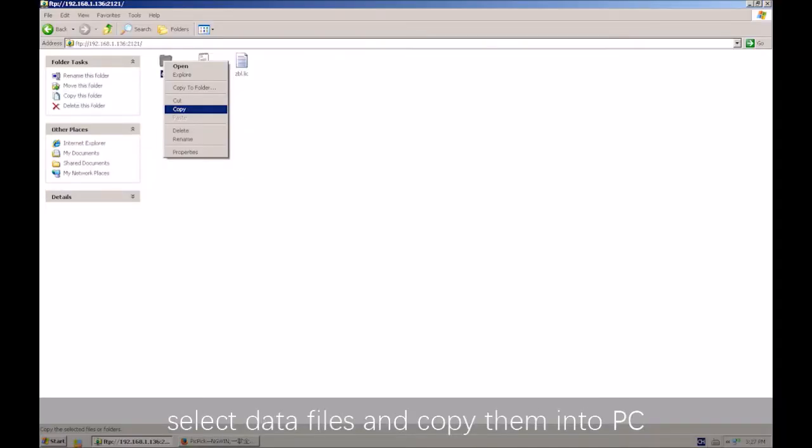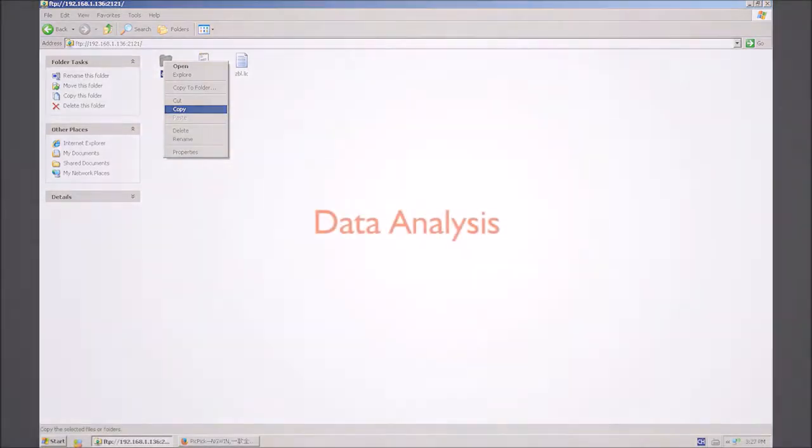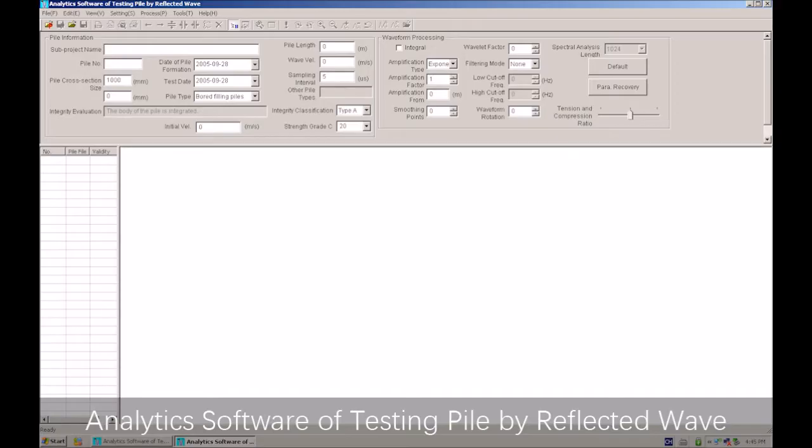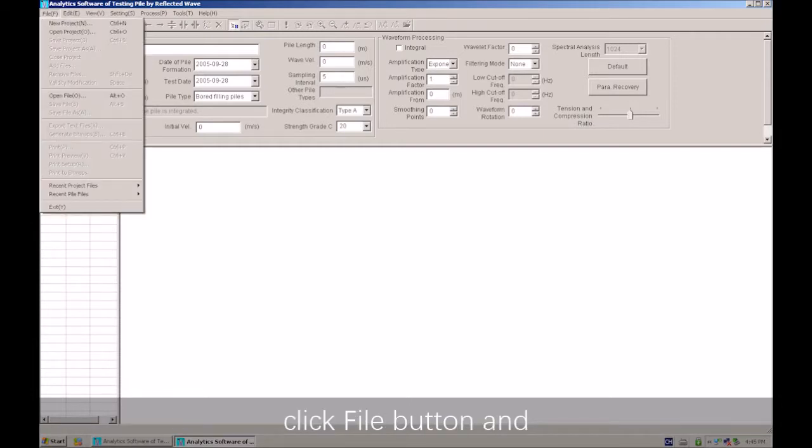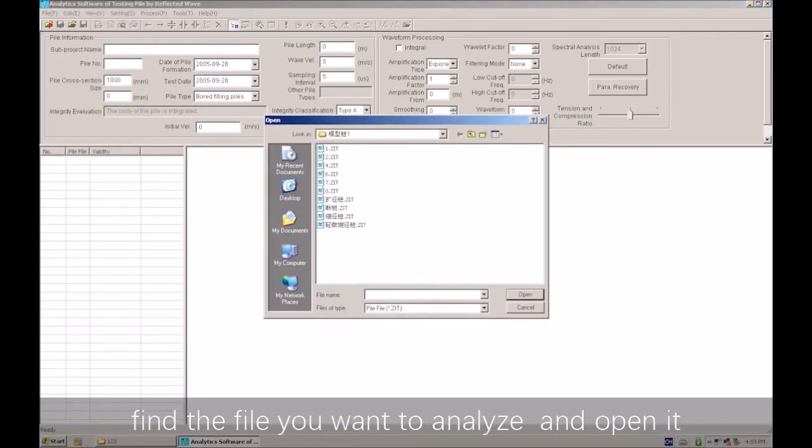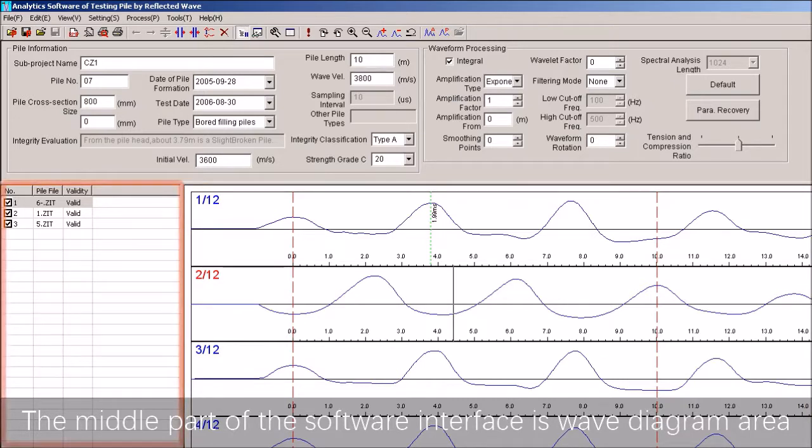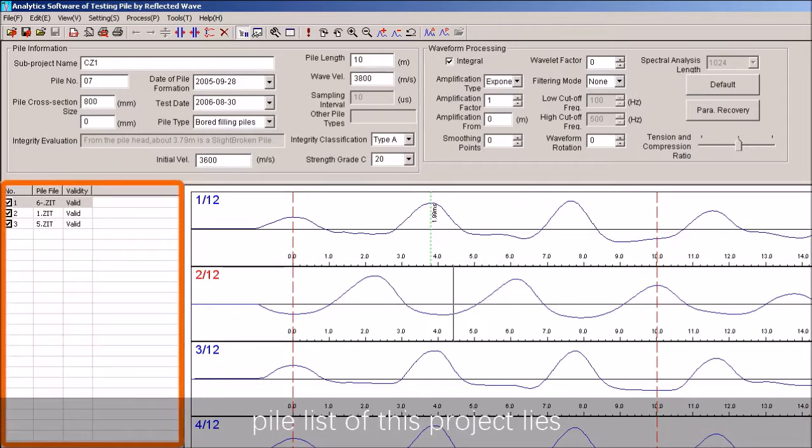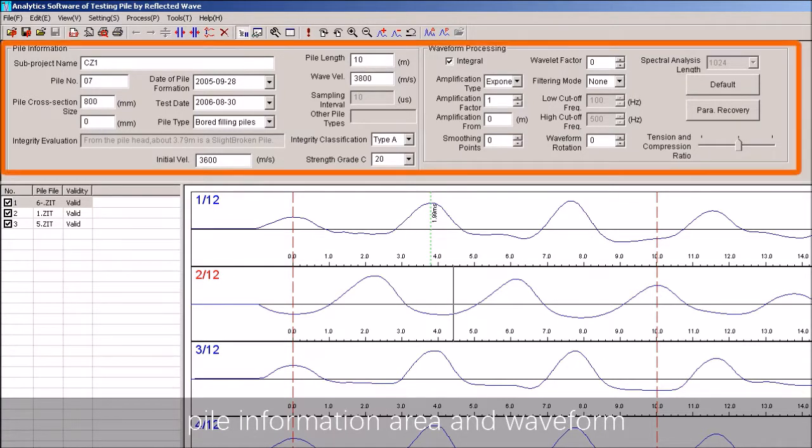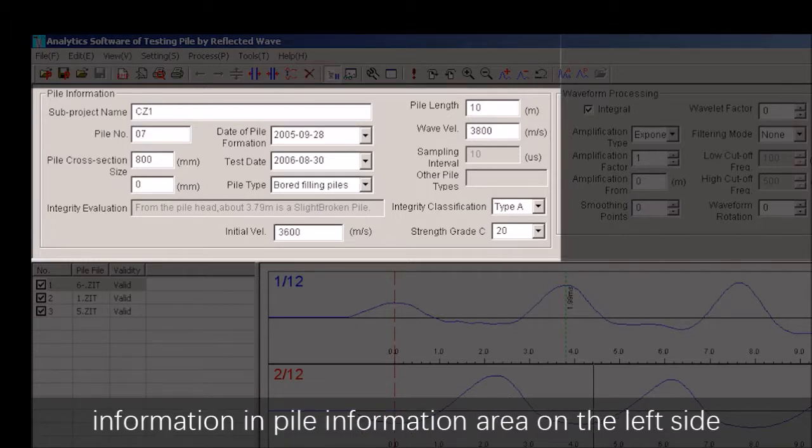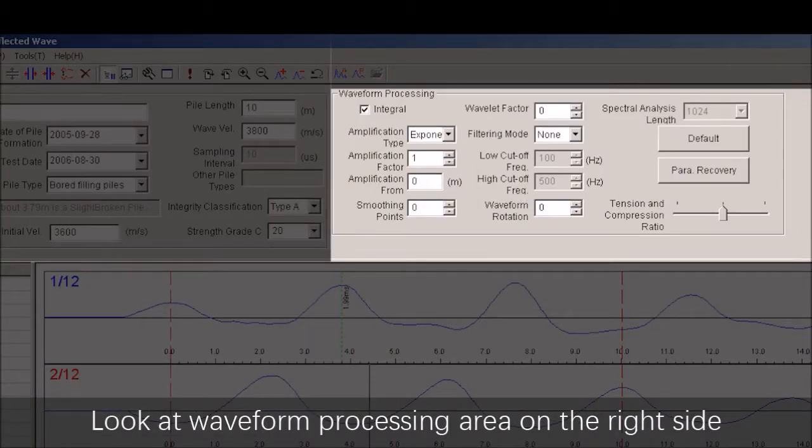Data analysis: Click and open the analysis software for testing pile by reflected wave. Click the file button and find the file you want to analyze and open it. The middle part of the software interface is the waveform diagram area. The pile list of this project lines on the left side of the waveform diagram area. Pile information area and waveform processing area line above the waveform diagram area.